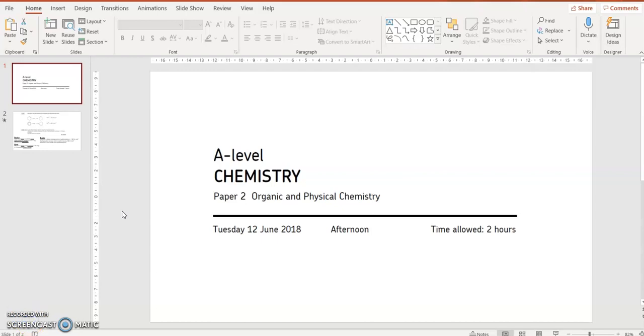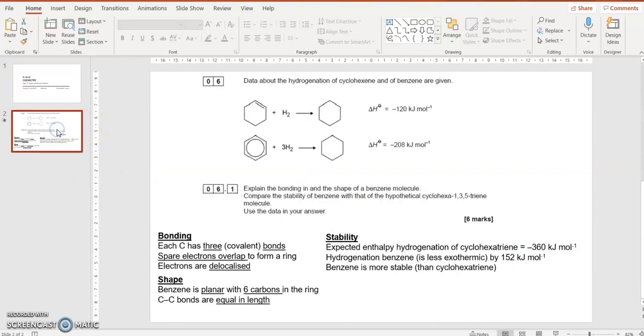Just making sure you know about the bonding in benzene. 2018 paper 2, as we look at this one question, then it asks you to explain the bonding in benzene. Well, benzene has got six carbons.